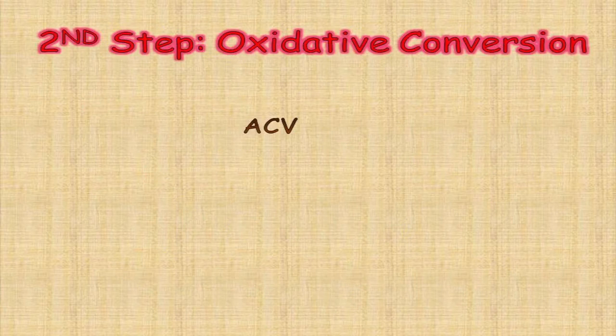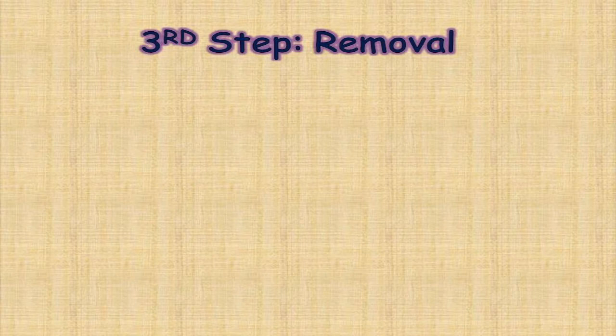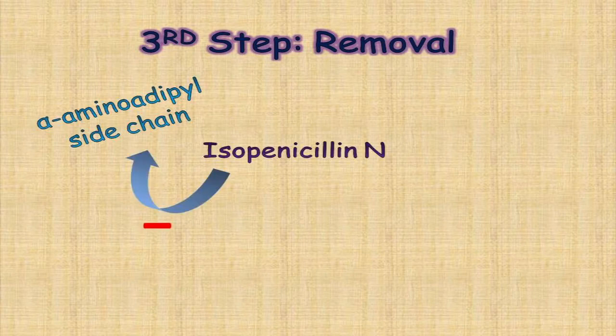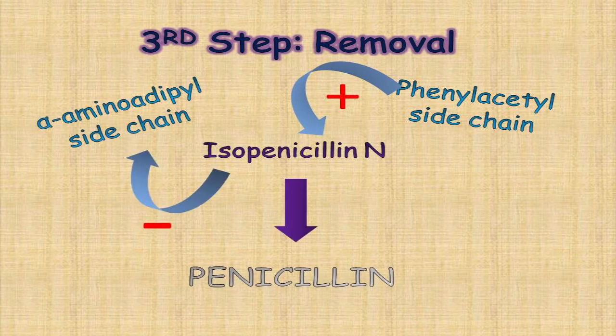Next, ACV will be converted into isopenicillin N through the second process, which is oxidative conversion. In the removal step, removal of the alpha aminoadipic acid side chain and its replacement by a phenylacetyl side chain will yield the basic form of penicillin.